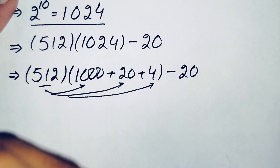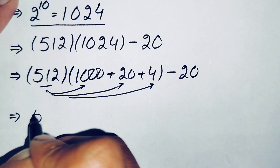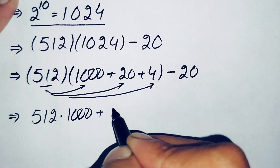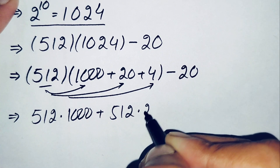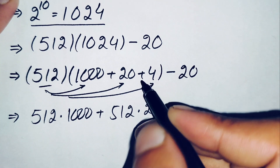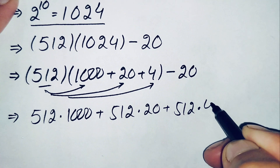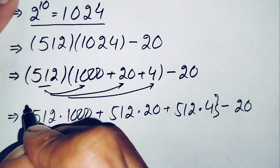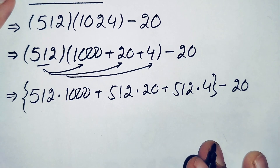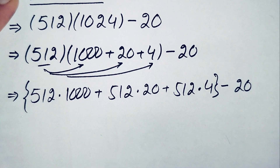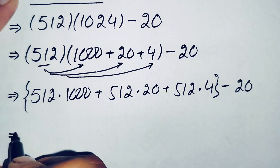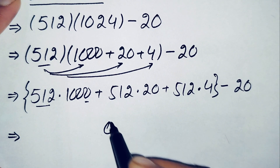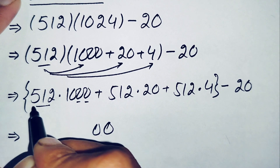Now we first multiply 512 with 1000, then with 20, and then with 4. So this will become 512 times 1000, plus 512 times 20, plus 512 times 4, minus 20. Now we will simplify the numbers inside the brackets. Here: 512 times 1000 — since 512 times 0 is 0, 512 times 0 is 0, and 512 times 1 is 512 — this gives 512000.